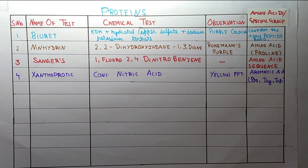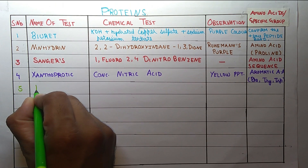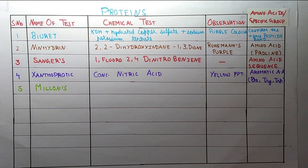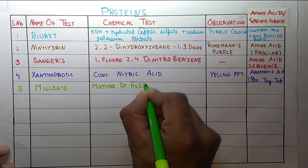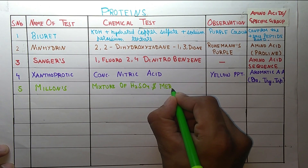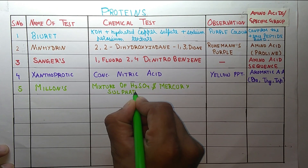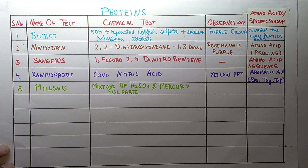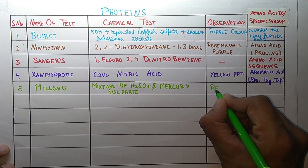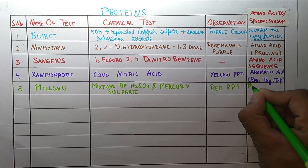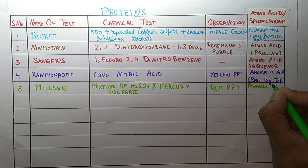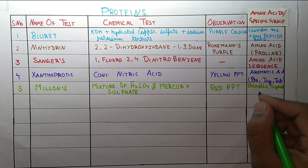The next test is Millon's test. In Millon's test we use a mixture of sulfuric acid and mercury sulfate. The color observed is a red precipitate. It confirms the phenolic group, which is present in the amino acid tyrosine.